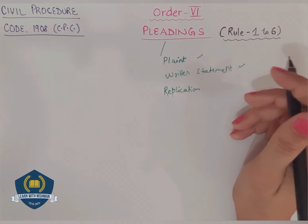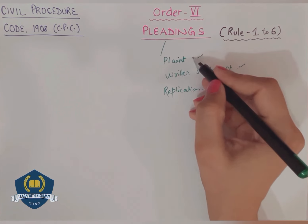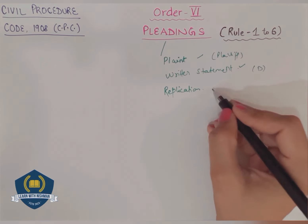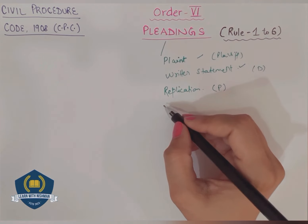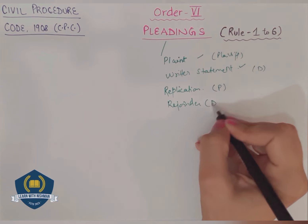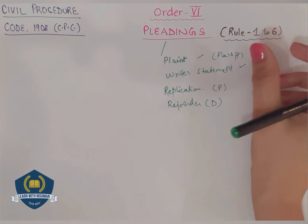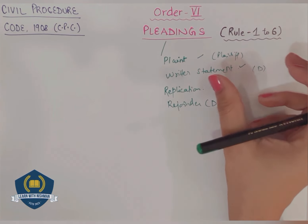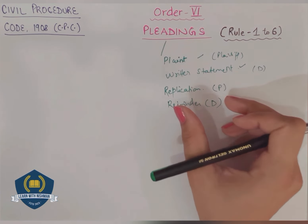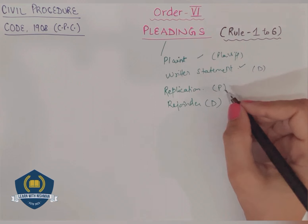After replication, the defendant can also file a rejoinder as a reply to the replication. So - plaint was filed first by the plaintiff, then the written statement by the defendant, then replication by the plaintiff, and in reply to that replication, what will be given? Rejoinder - by the defendant. So the original plaint is a pleading, written statement is a pleading, replication in reply to the written statement is also a pleading, and the defendant's rejoinder - which we call an additional written statement - that is also a pleading.